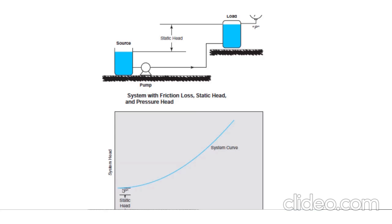On the horizontal axis, we have the system flow rate, and on the vertical axis, we have the head. The relationship between the head and flow rate defines the system curve.